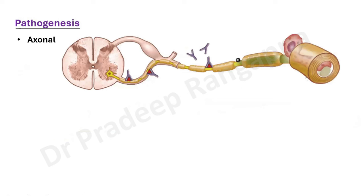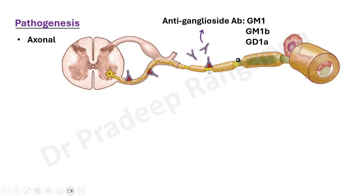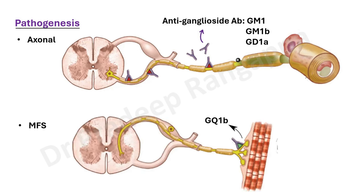In the Miller-Fisher variant, antibodies are developed against GQ1B, which act at the neuromuscular level. So the pathogenesis involves specific antibodies against certain elements of different nerve components — it can be the Schwann cells, or the axons (anti-ganglioside antibodies: GM1, GM1B, GD1A), or the GQ1B structure. Another pictorial representation shows Campylobacter jejuni triggering antigen-presenting cells and B cell activation, producing cytokines and antibodies — leading to axonal GBS where antibodies are against the axon, and demyelinating GBS where antibodies are against the myelin sheath. Miller-Fisher is against GQ1B.